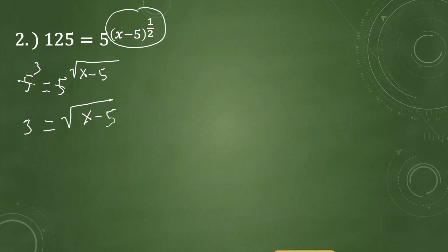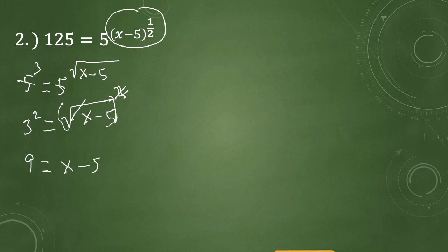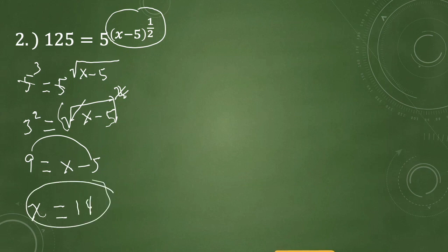We square both sides to eliminate the square root, leaving us with 9 equals x minus 5. Cancelling the radical form, we transfer negative 5 to the other side, and x becomes 14. This is the answer for number 2.